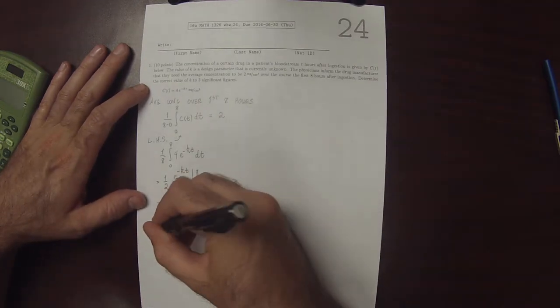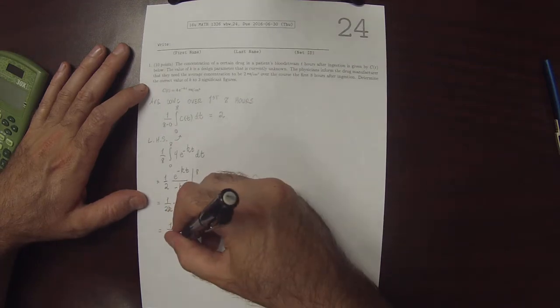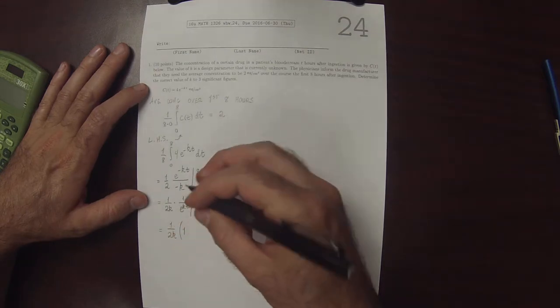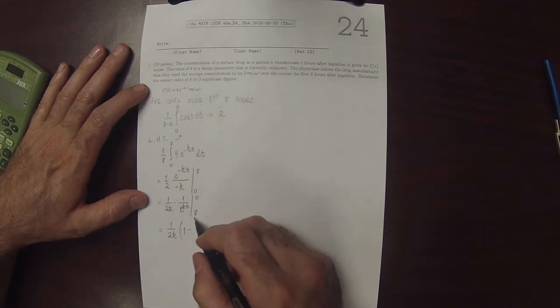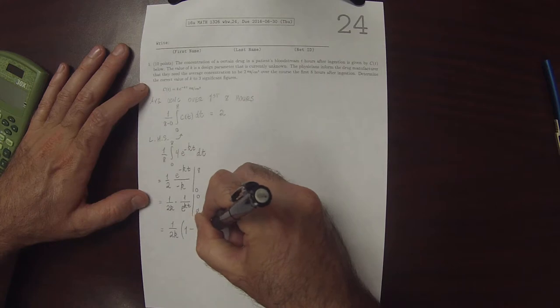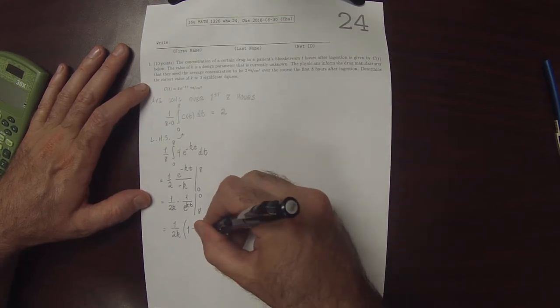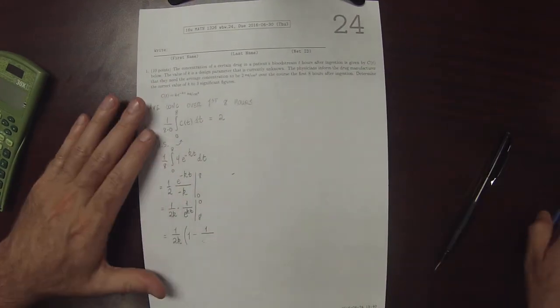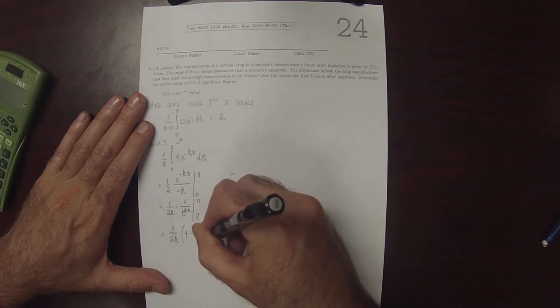So doing that, that's 1 over 2K multiplied by this evaluated at T is 0 is 1. And then minus, this evaluated at T is 8, is 1 over exponential of e to 8K. Okay.